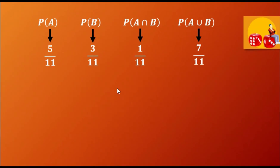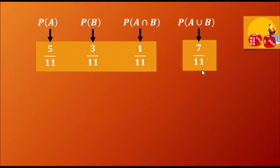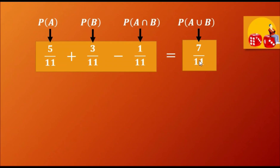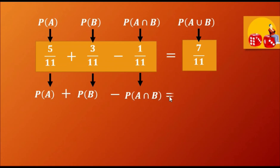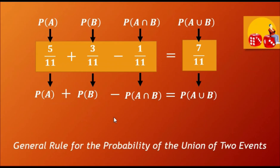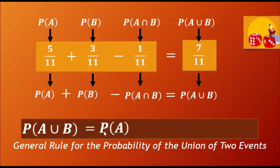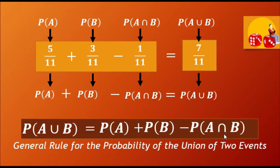Can you find a relationship among the first three probabilities that may lead to the probability of A union B? Notice that when you add 5 over 11 and 3 over 11, we get 8 over 11. And when you subtract 1 over 11 from their sum, the result is 7 over 11. With that, we can say that the probability of A plus the probability of B minus the probability of A intersection B is equal to the probability of A union B. This is the general rule.